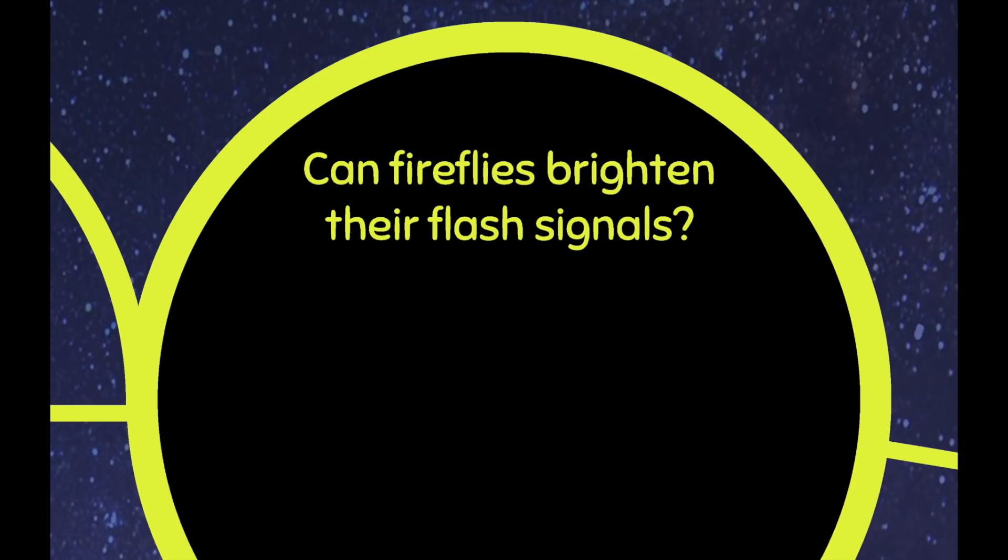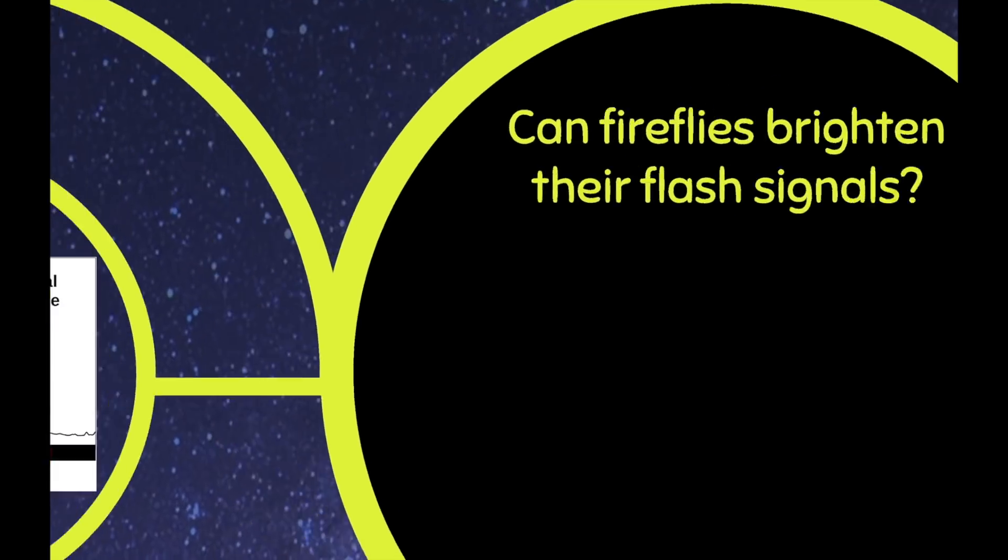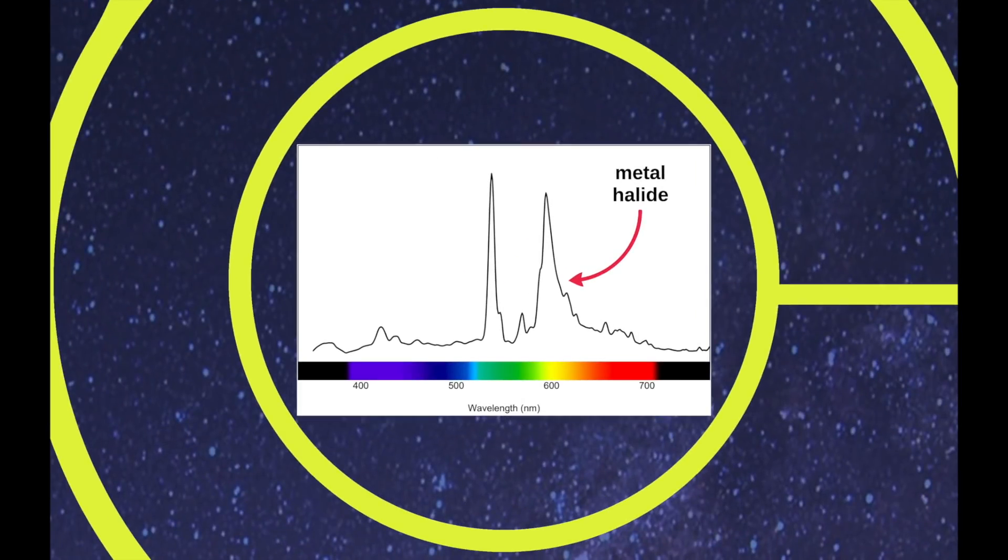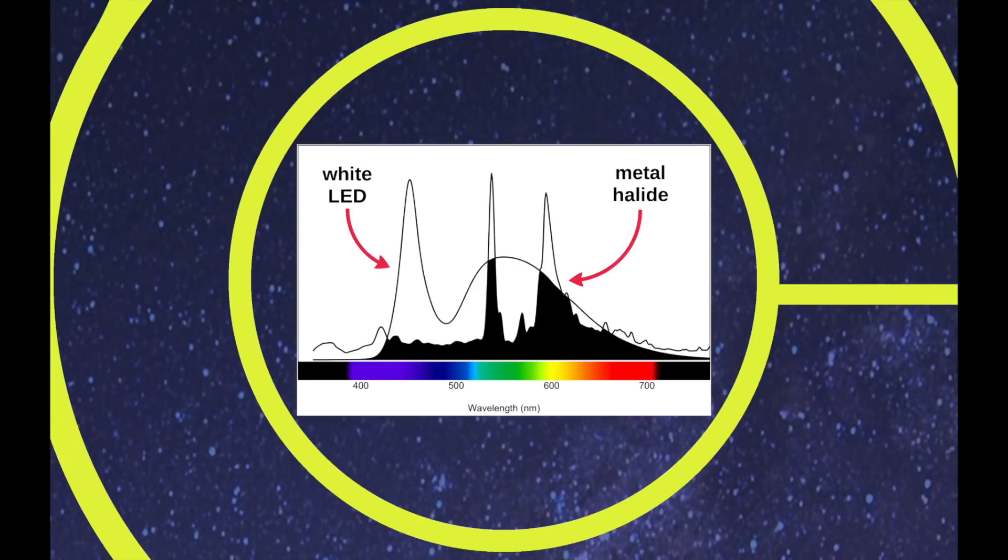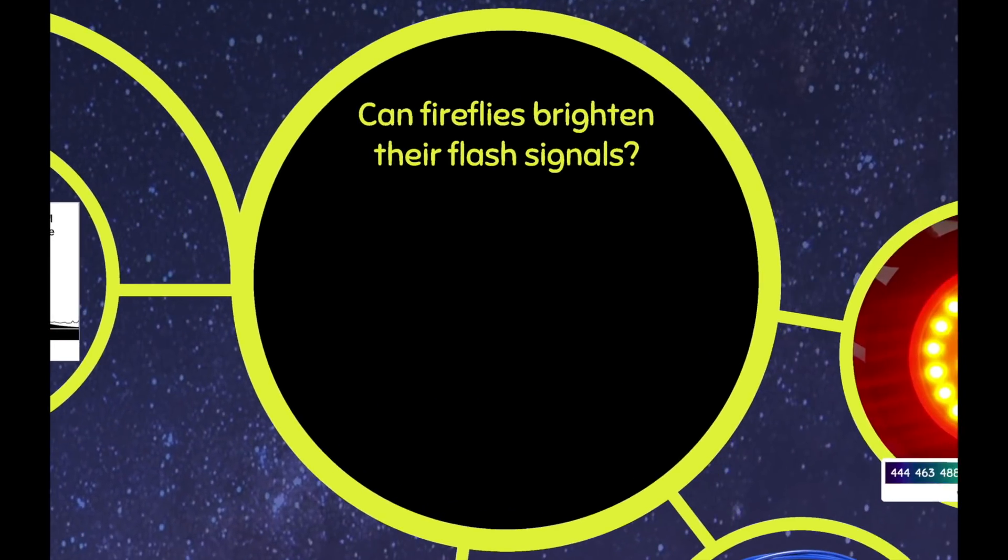And my other question has to do with the source of artificial light. So the first study with the sport court had these bright metal halide floodlights, which you can see put out a lot of green and yellow light. Whereas the second study used white LEDs, which put out a lot more blue light and not as much red or UV. So we can't really compare these two sources of light. We don't know which colors of light are causing the fireflies to respond in this way. So I wanted to investigate this with the following question.